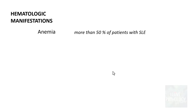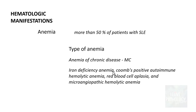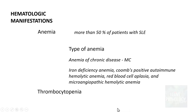Hematologic manifestations include anemia, seen in more than 50% of patients with SLE. The most common type is anemia of chronic disease, but it can also be iron deficiency anemia, Coombs-positive autoimmune hemolytic anemia, red blood cell aplasia, or microangiopathic hemolytic anemia. The second hematologic manifestation is thrombocytopenia, and when all cell lines are decreased, it is pancytopenia.